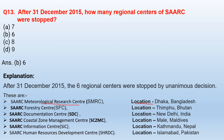The 6 stopped regional centers were: SAARC Forestry Center in Thimphu, Bhutan; SAARC Documentation Center in New Delhi, India; SAARC Postal Zone Management Center in Male, Maldives; SAARC Information Center in Kathmandu, Nepal; and SAARC Human Resources Development Center in Islamabad, Pakistan.